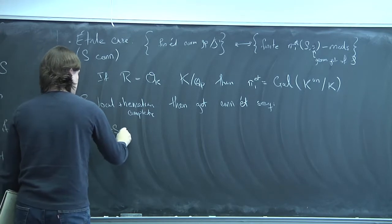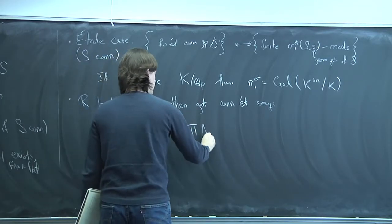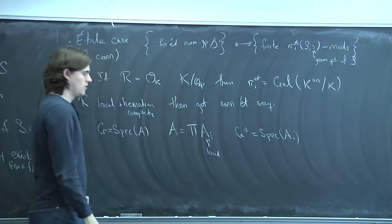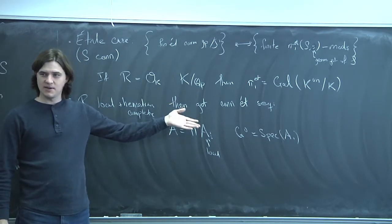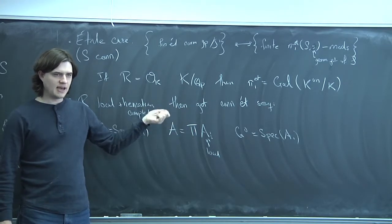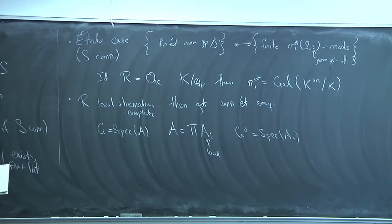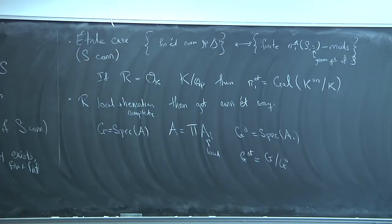If G = Spec A, where A is our Hopf algebra as an R-module, then A is semi-local since Artinian and Henselian rings break up into a product of local things. You can define the connected component of the identity, which is Spec of A₀, where A₀ is the thing where the co-unit factors through. Previously I defined the étale quotient incorrectly — there isn't a unique maximal étale sub-algebra, but there is a unique one stable under comultiplication, and that gives the étale quotient as G mod G₀.